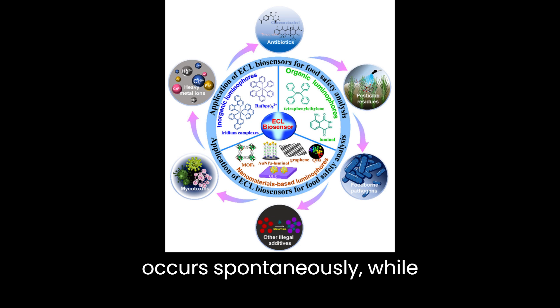Chemiluminescence occurs spontaneously, while electrochemiluminescence requires an electric current. Both phenomena have important applications in various fields, from forensics to clinical diagnostics. Thank you for watching.